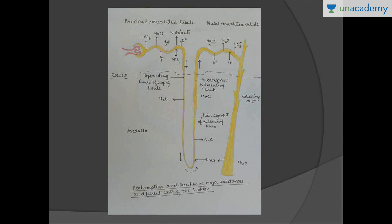Looking at this diagram — based on the NCERT, drawn by hand — it shows the role of various tubules in urine formation. The proximal convoluted tubule (PCT) is the major site of reabsorption. Almost 100% of glucose is reabsorbed here, along with 70–80% of electrolytes and water. It also reabsorbs bicarbonate to maintain acid-base balance, and secretes hydrogen ions and ammonium ions.